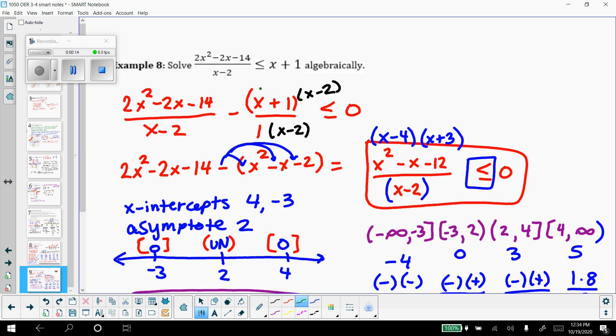Foil this out by going x times x is x squared, x times negative 2 is negative 2x. 1 times x is 1x, 1 times negative 2 is negative 2.